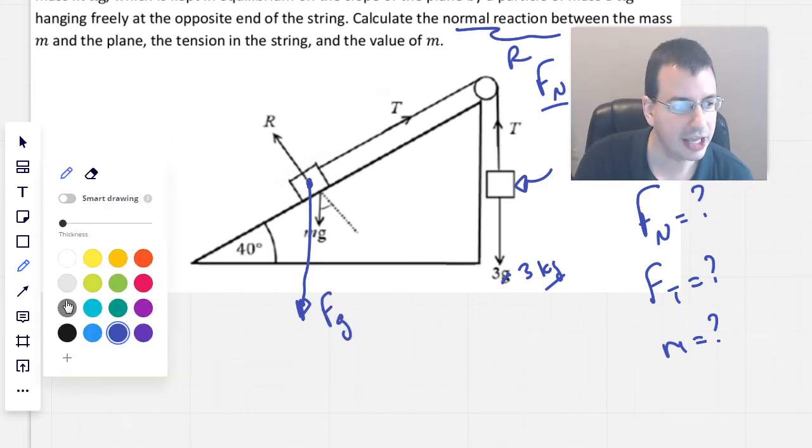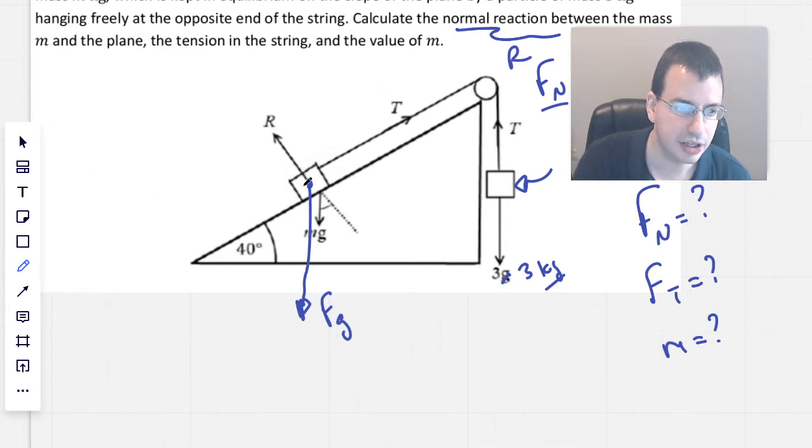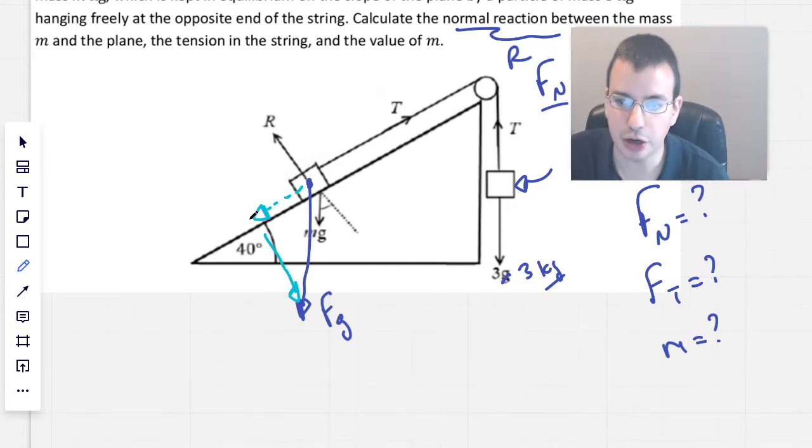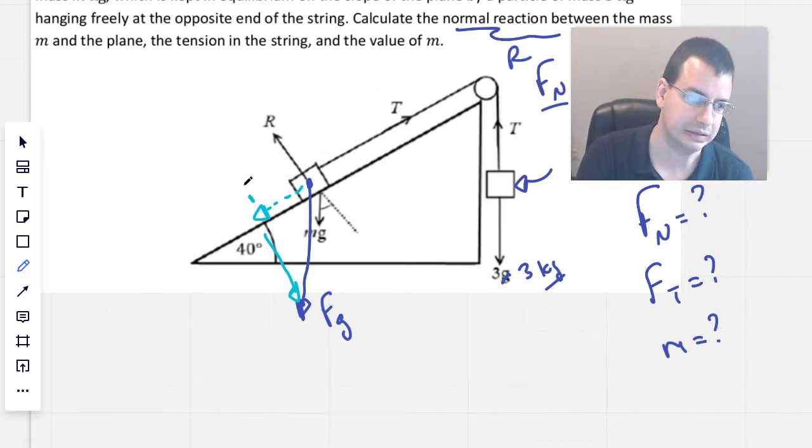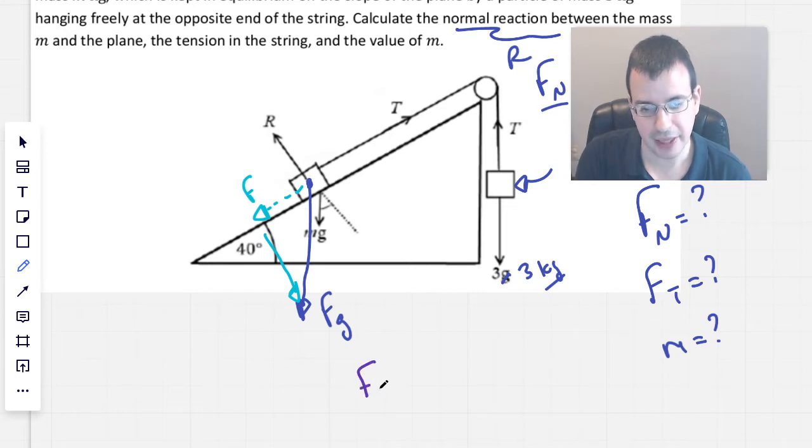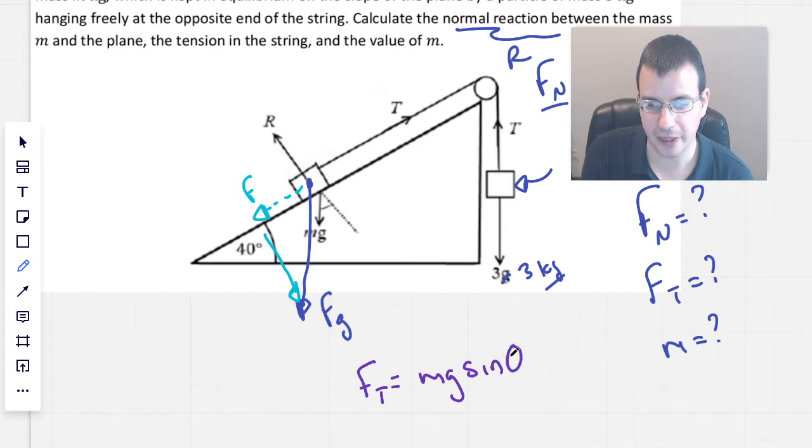We can then decompose this vector into something that looks like this, where this is not really the x and y components, but the down ramp component and the perpendicular or normal to the ramp component. And this part, I'm going to call f. And I just have memorized that that is going to be mg sine of theta.